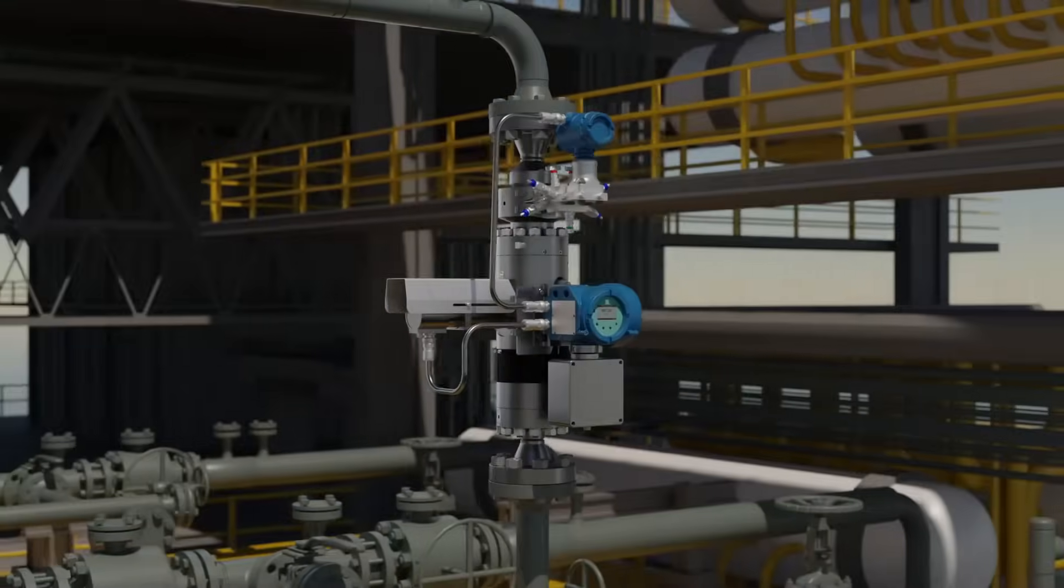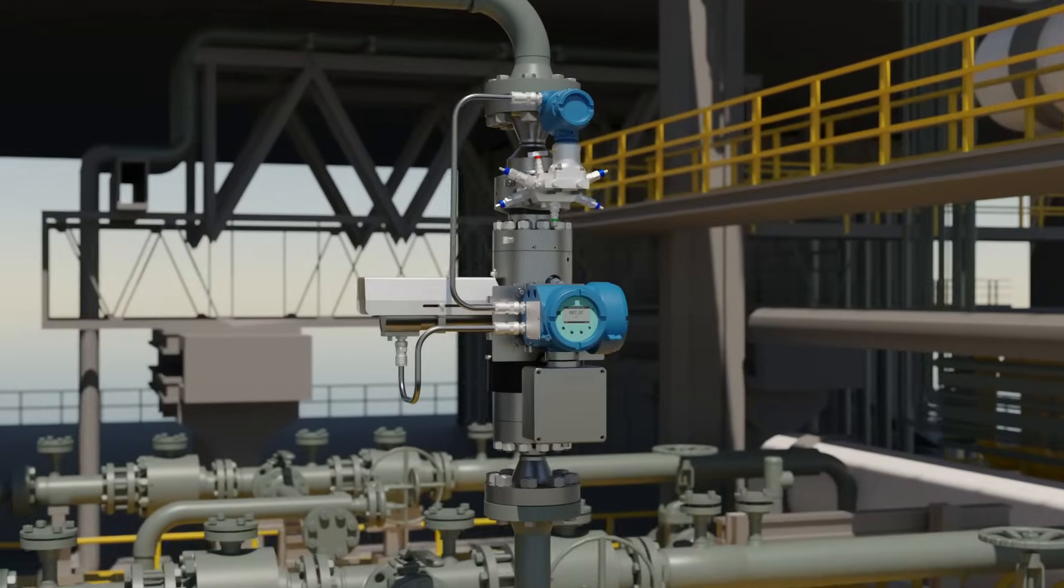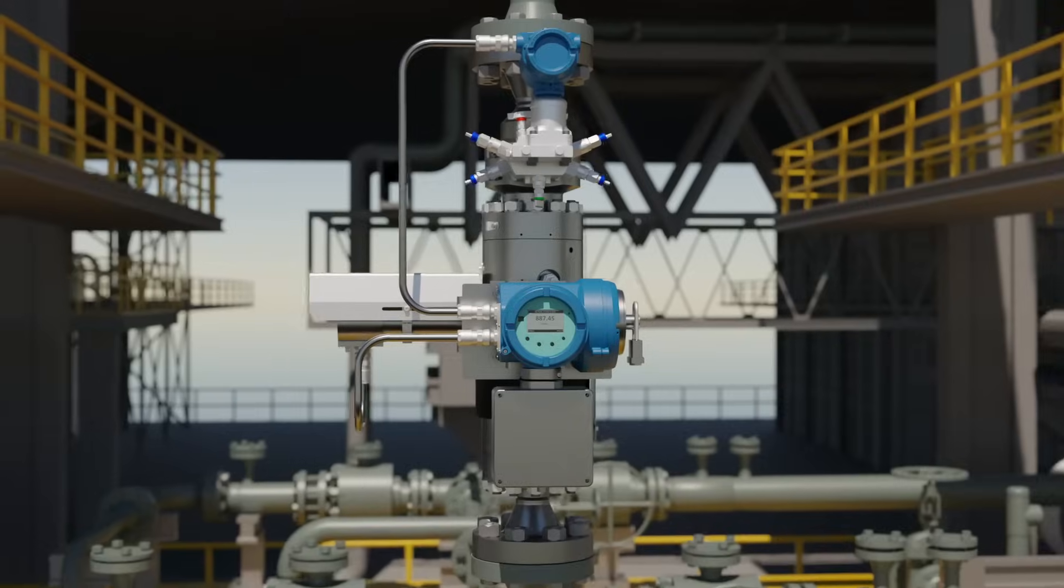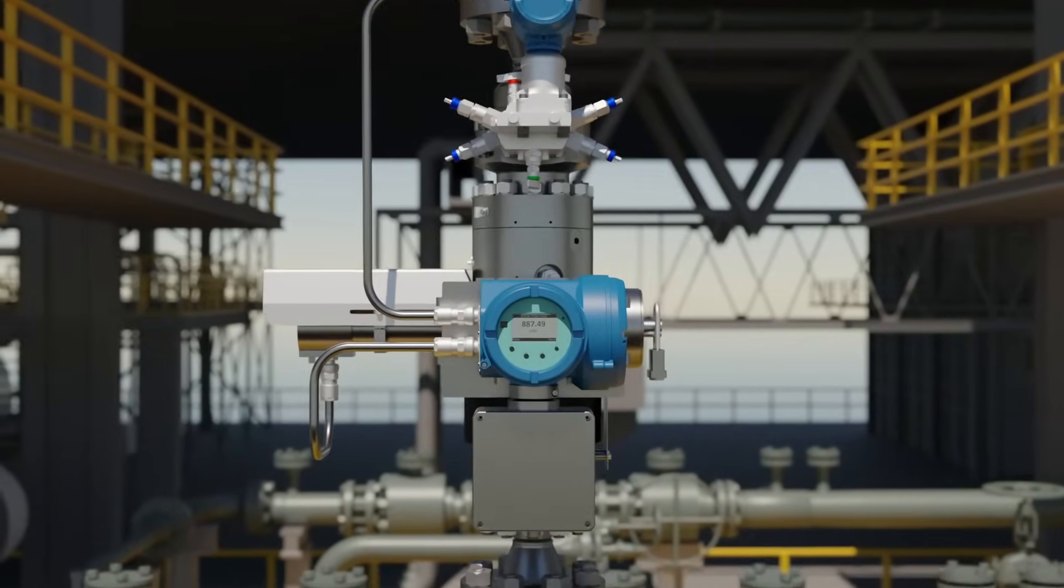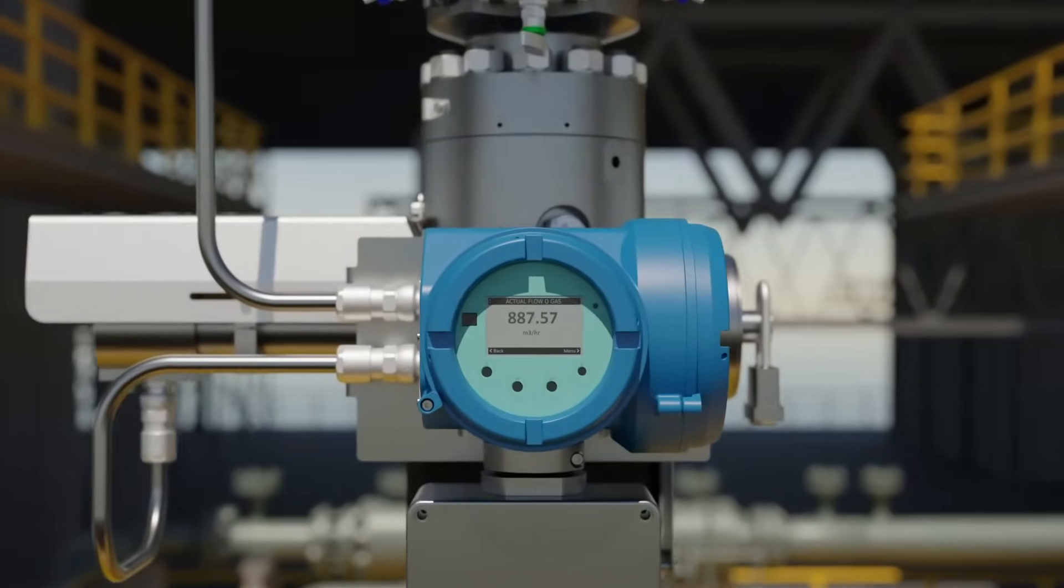The Roxar 2600 multi-phase flow meter is built on technology valued by our customers for three decades, now powered by the Roxar 5726 multi-phase transmitter. Emerson takes the next step, leading the way in multi-phase metering reliability, autonomy, and precision.